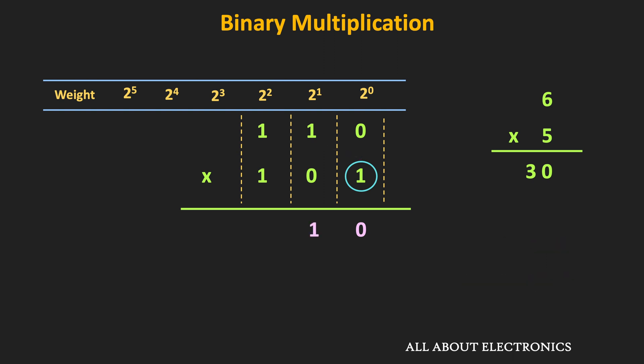Likewise, let us also multiply this 1 with the MSB position. Once again, 1×1 = 1. And their weights are 2^0 and 2^2. So if we multiply their weights, the result will be equal to 2 to the power 2. Therefore, we will place the result in that column. So in this way, we have multiplied the first digit of the multiplier with the multiplicand, and we got our first partial product.